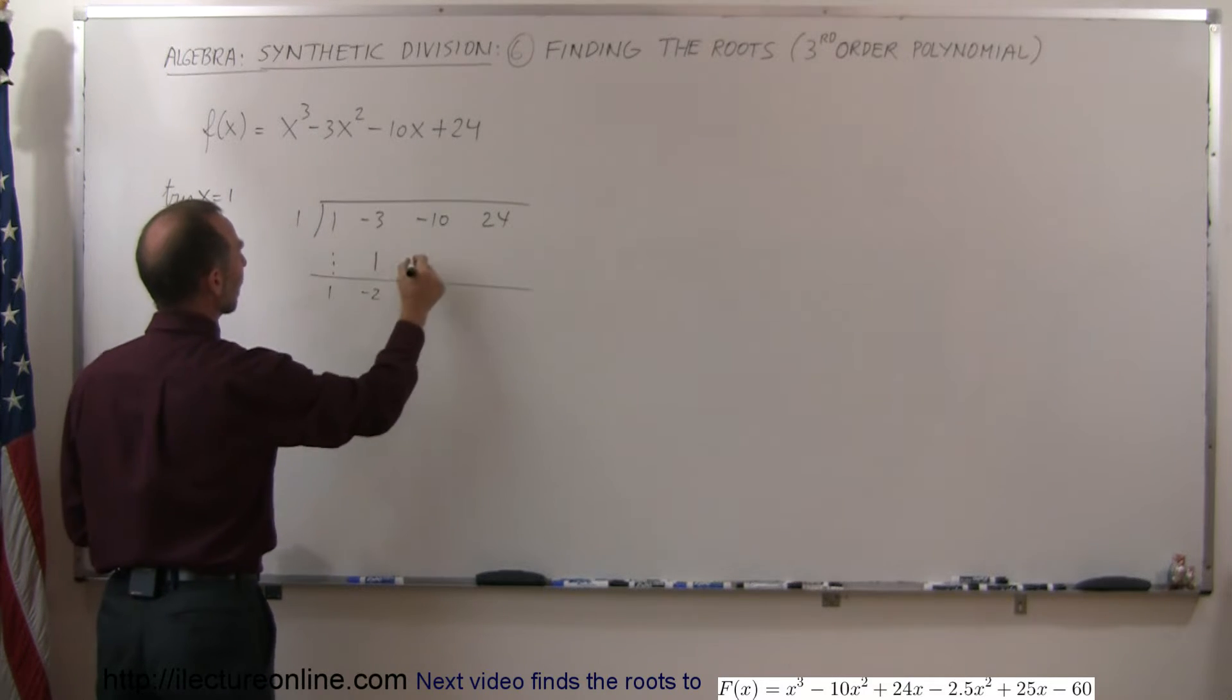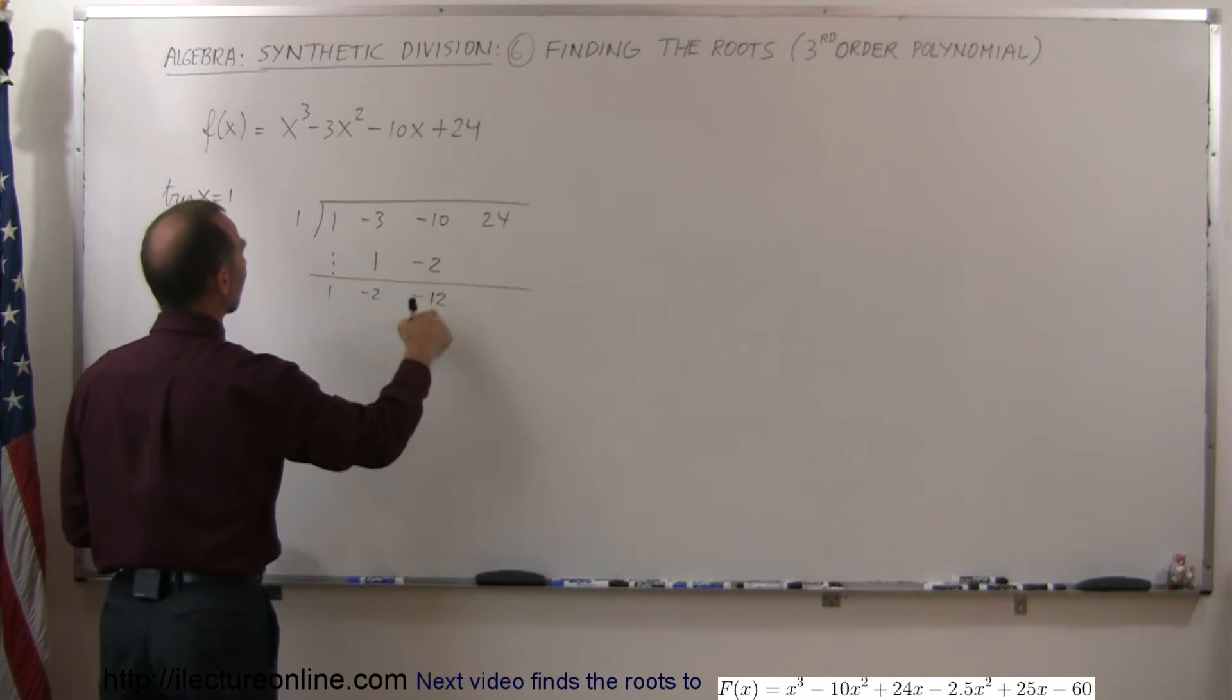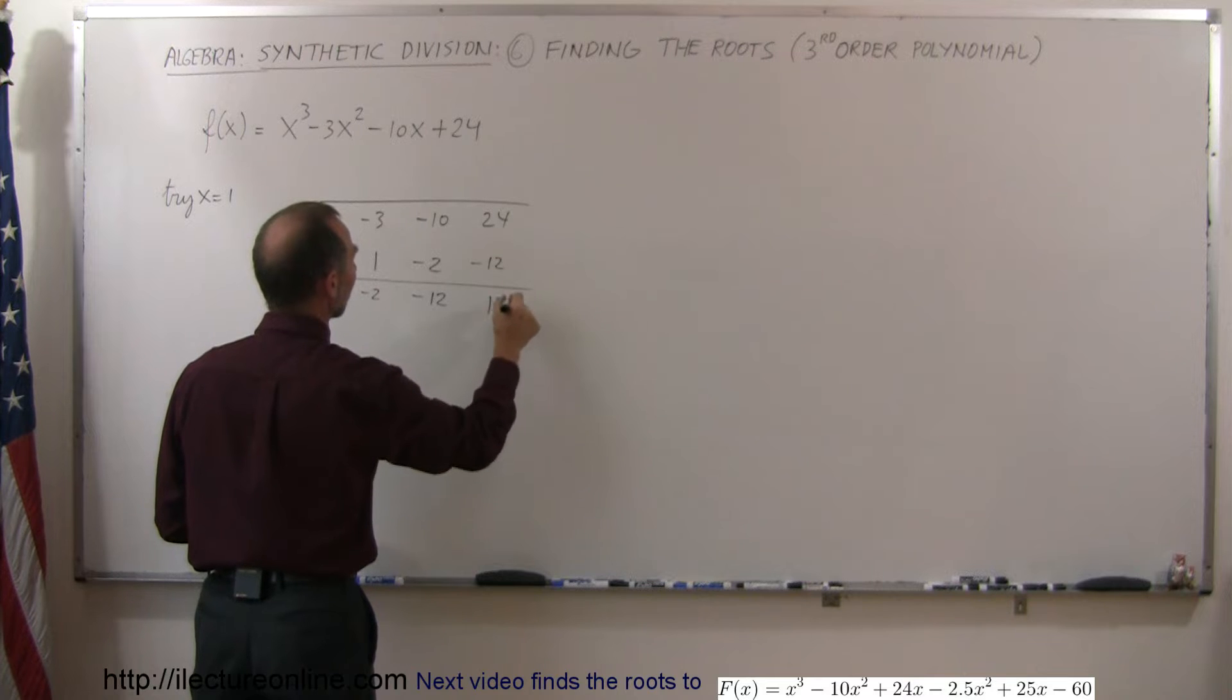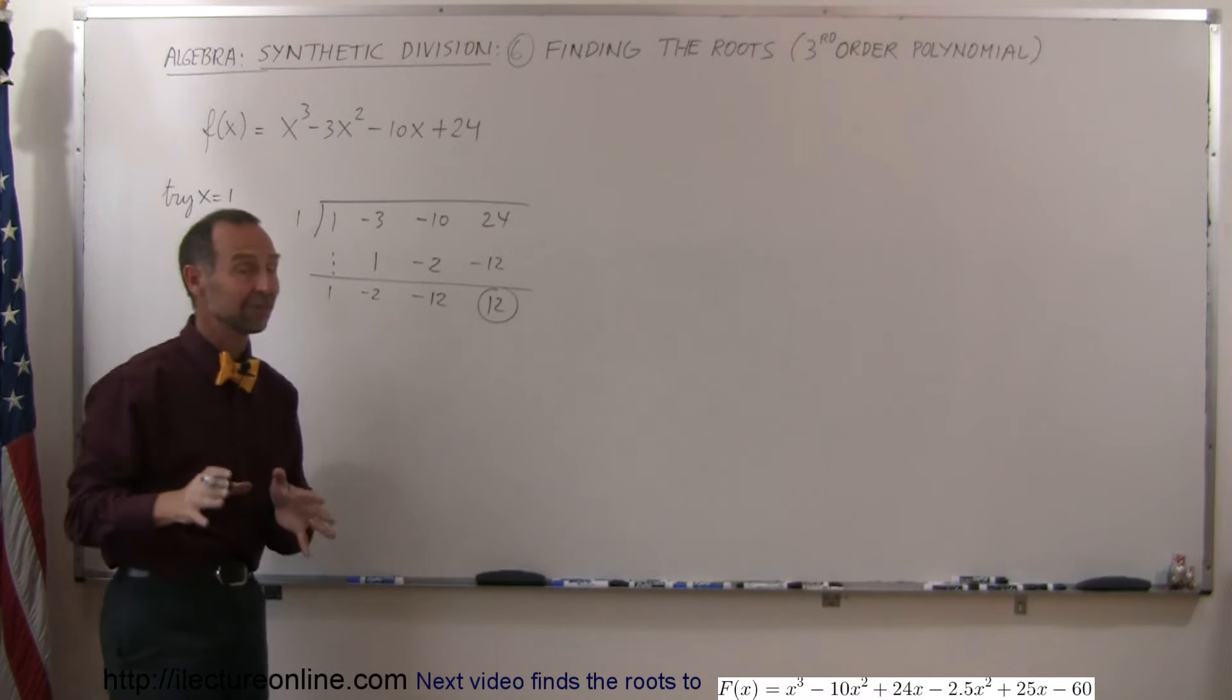Negative 2 times 1 is negative 2. Add those together, negative 12. Negative 12 times 1 is negative 12. Add them together, you get 12. There's a remainder, meaning that's definitely not one of the roots.